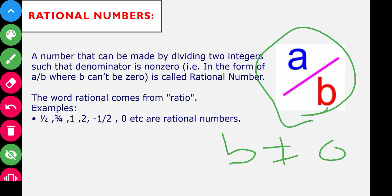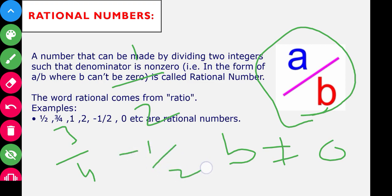For example, 1/2 is a rational number because it is a ratio of two integers, 1 and 2, and it is in the form of a/b where b is not equal to zero. Similarly, 3/4 is also a rational number because 3 and 4 are integers. Also, -1/2 is a rational number because -1 is an integer and 2 is also an integer.